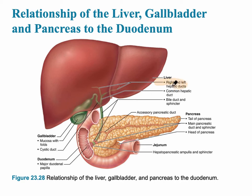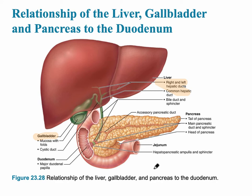Let's look at the anatomy of the liver first. The liver is drained by the right and left hepatic ducts, which lead into the common hepatic duct. The liver plays the most significant role in digestion of lipids because it produces bile, which is then stored in the gallbladder. Everything drains into the duodenum through the hepatopancreatic ampulla and sphincter.